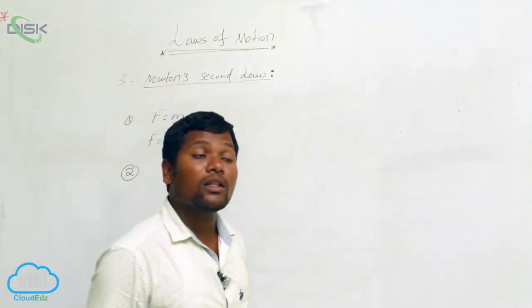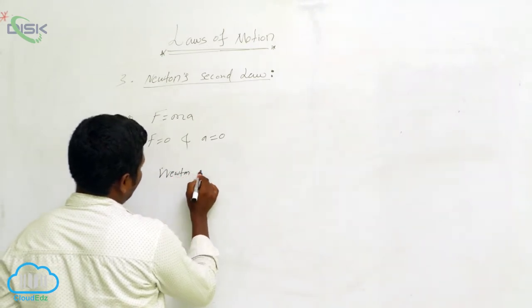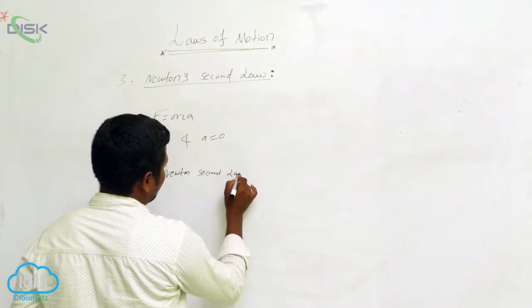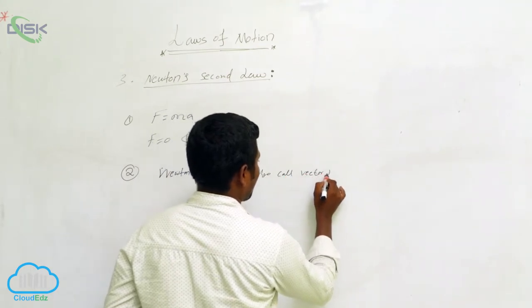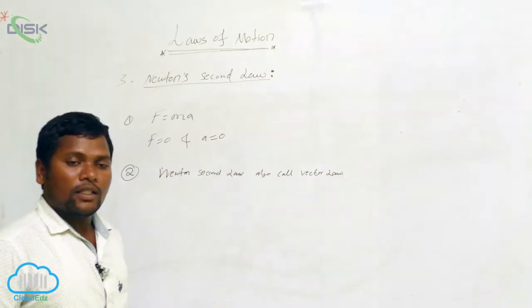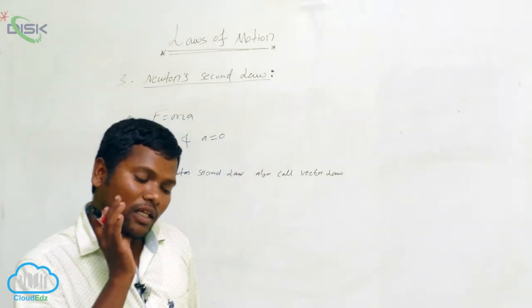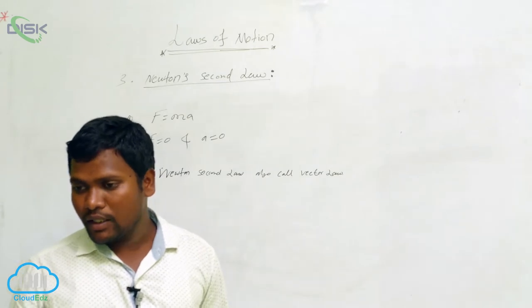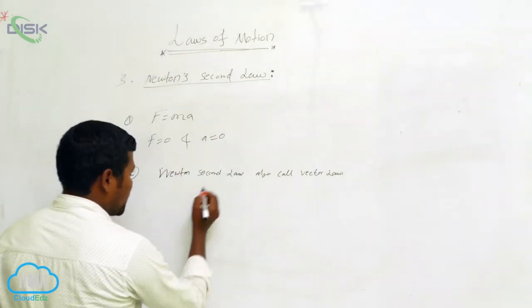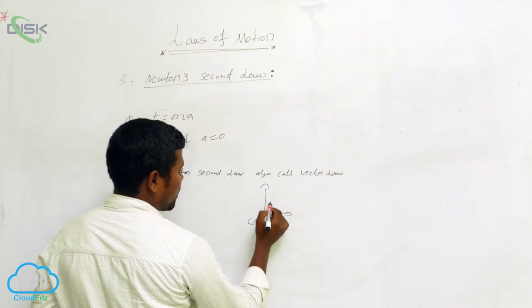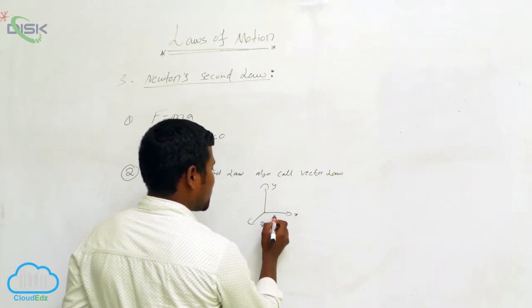Newton's Second Law can also be called the vector law. A particle may exist in one-dimensional, two-dimensional, or three-dimensional space. Consider a three-dimensional shape with an x-axis, y-axis, and z-axis.